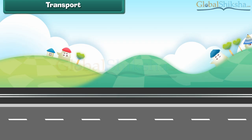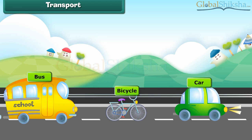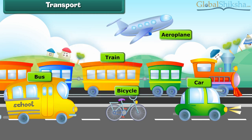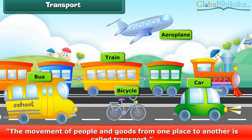Dear friends, we all go from one place to another by different vehicles like bicycle, bus, car, train and airplane. The movement of people and goods from one place to another is called transport.